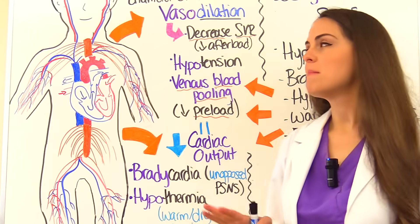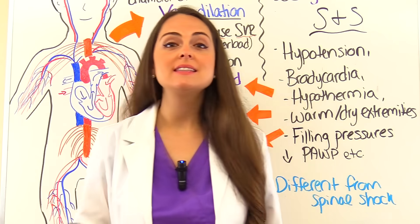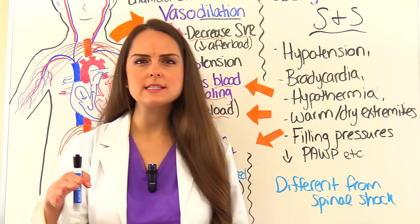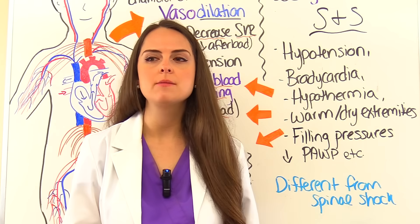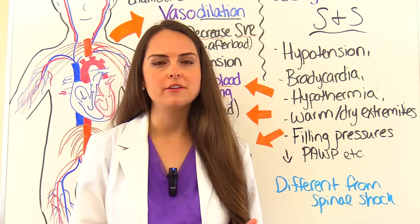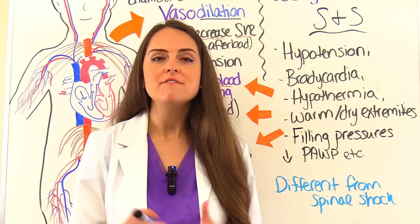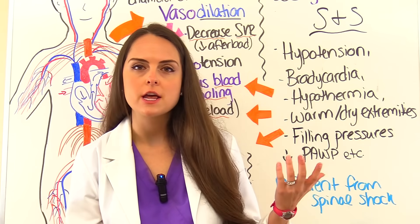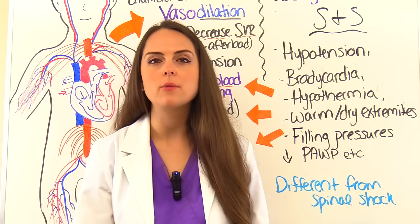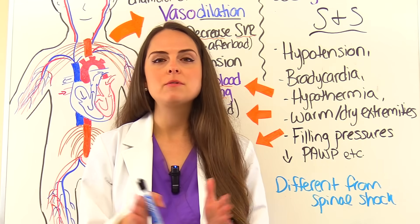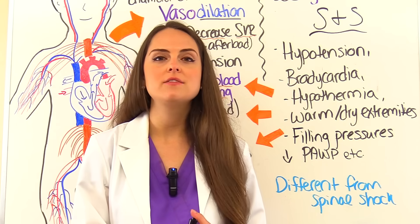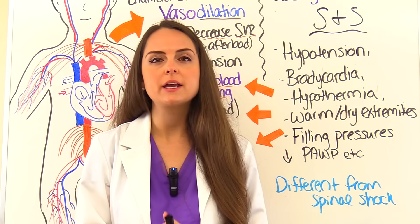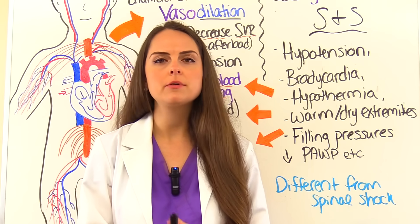Keeping all that pathophysiology in mind, let's sum up the signs and symptoms we're going to see. Remember, with other types of shock, the sympathetic nervous system could take over early to try to save our life — by causing vasoconstriction, regulating vessel diameter, and secreting epinephrine and norepinephrine. But here in neurogenic shock, the sympathetic nervous system just can't do that. That's why some of these signs and symptoms are a little different compared to those other types of shock.